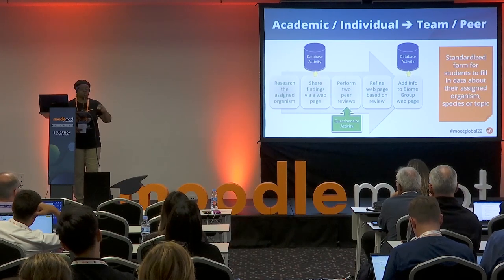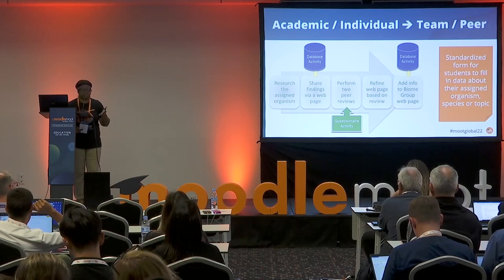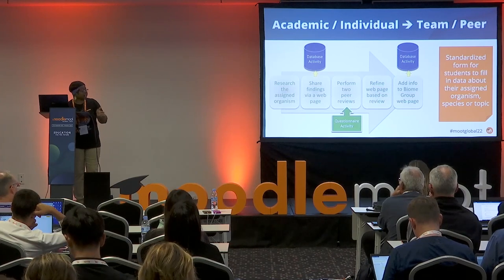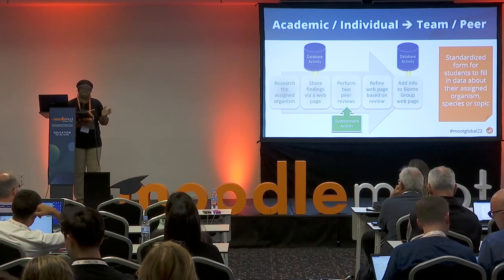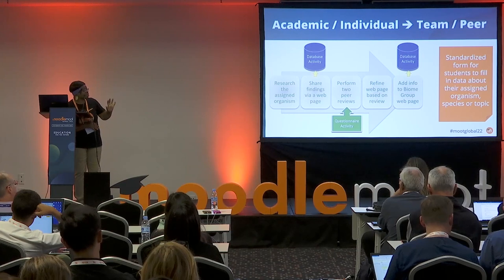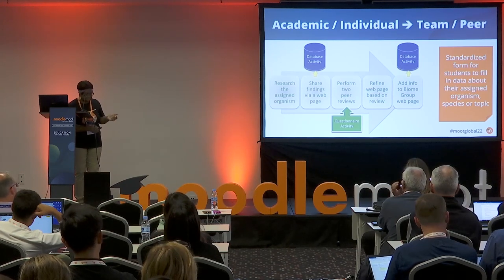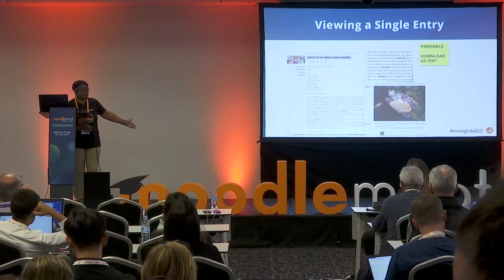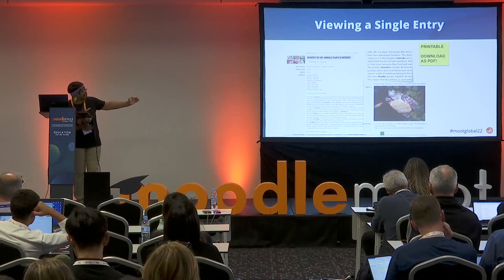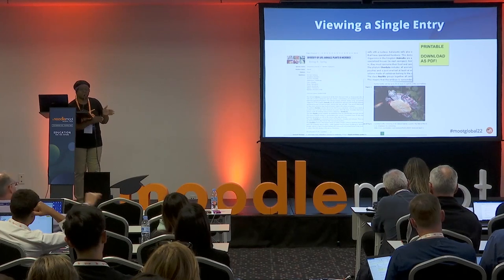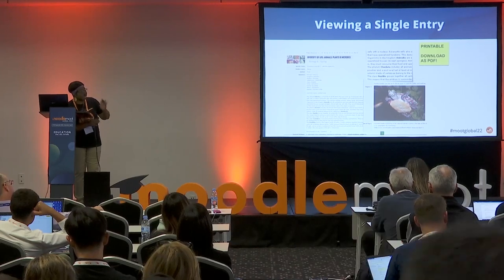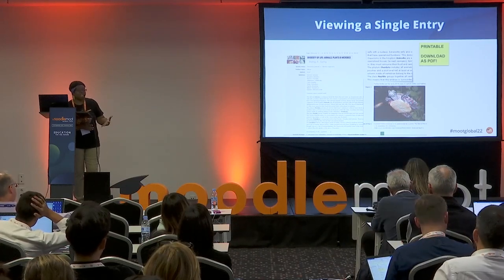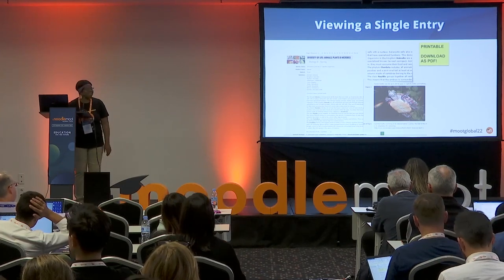They used a questionnaire tool for peer review — everybody reviews their classmates' posts, and based on the feedback they make a revision. Then in a final second database, different groups of organisms that belong together were grouped. They had a standard form with very familiar tools, and it gave them a standard page that looks like a web page without needing to figure out HTML or CSS. Images were automatically standardized in width and height, and they added a print button so students could print to PDF for their portfolio.